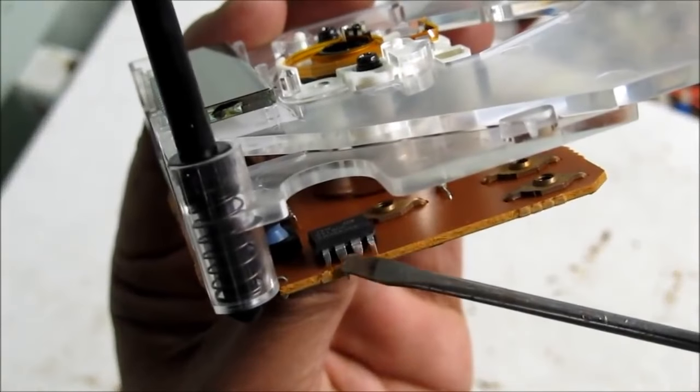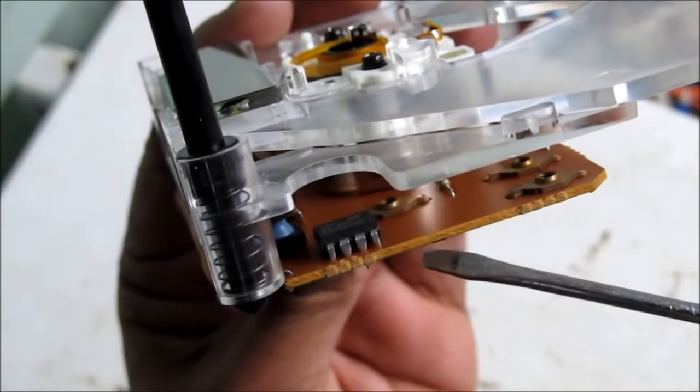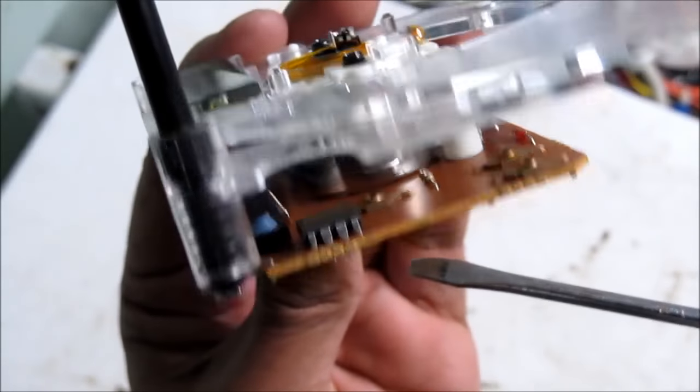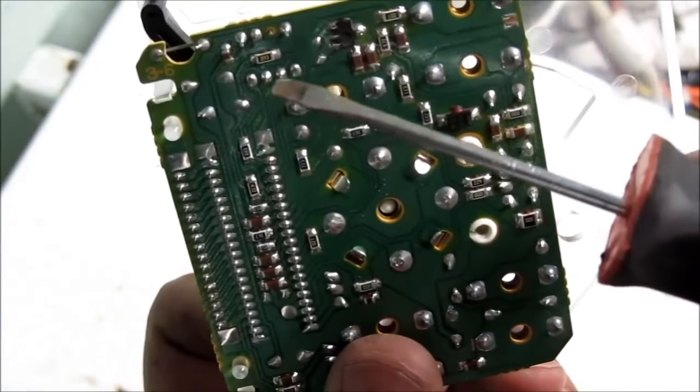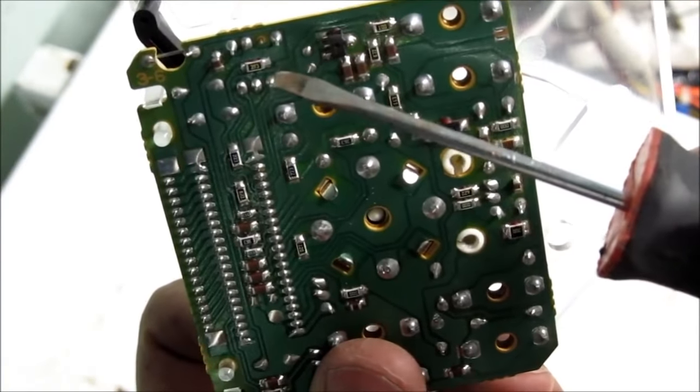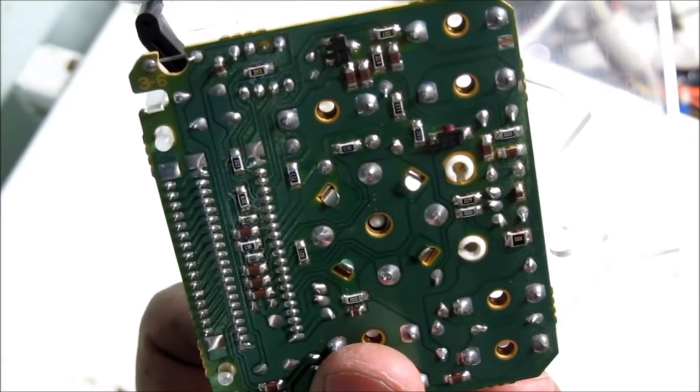This is the chip that stores the odometer information. It's a 93C46 EEPROM chip. It has 8 pins that need to be desoldered from the back of the board. And then we can connect it to a computer serial port for reprogramming.